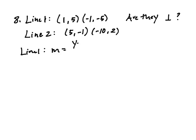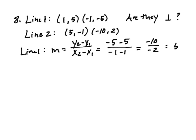Slope equals y sub 2 minus y sub 1 over x sub 2 minus x sub 1. So we have negative 5 minus 5 over negative 1 minus 1. This gives me negative 10 over negative 2, which equals 5. So that's the slope of my first line.